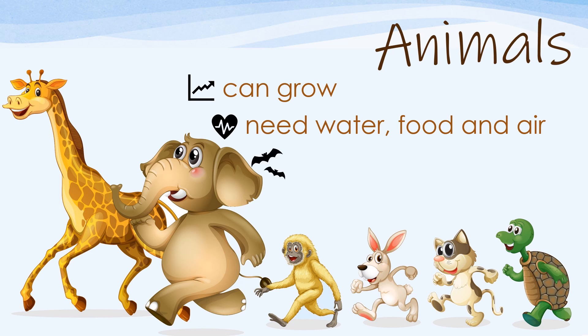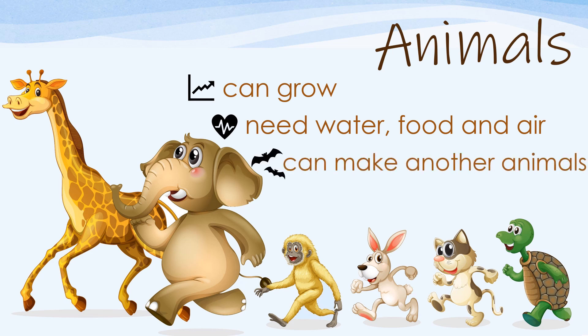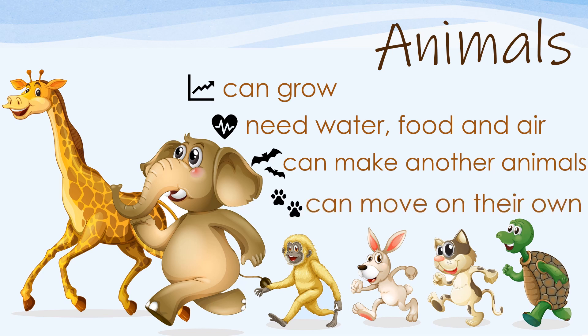Animals can make another animal. For example, a mummy and a daddy monkey can have a baby monkey. Animals can move on their own because they have legs; they can walk and run to find their food.